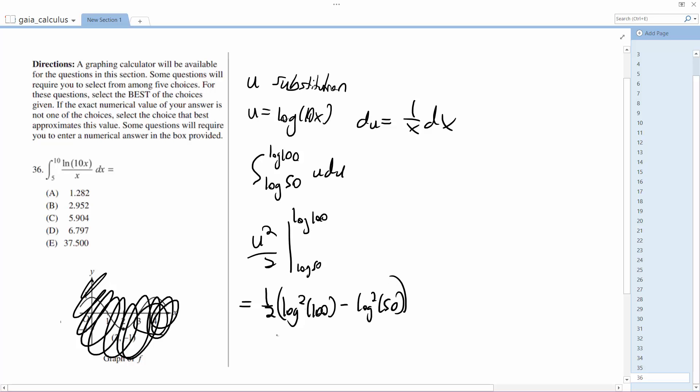And what we end up with is 1 half log of 2 log of 5,000. And which sums down to about 2.952, approximately.